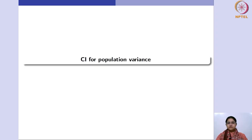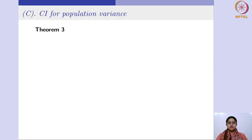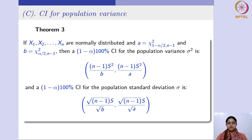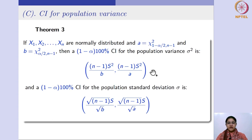We are done with the confidence interval for population mean, and the next one is finding the confidence interval for population variance. The theorem says that if you have a random sample coming from normal distribution and you have points a and b defined as chi-square values for n minus 1 degrees of freedom, then the 1 minus alpha, 100 percent confidence interval for sigma squared is defined accordingly. For sigma, it is simply the square root of each of those terms.